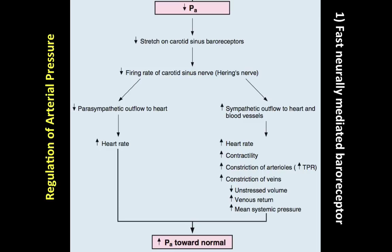The vasomotor center decreases parasympathetic vagal outflow and increases sympathetic outflow to the heart. This results in increased heart rate and increased contractility and stroke volume from the sympathetic system. Together, increased heart rate, contractility, and stroke volume increase cardiac output, which increases arterial pressure. Recall the key equation: cardiac output equals stroke volume times heart rate.